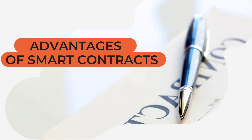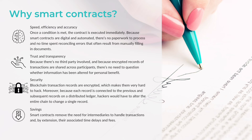First I will tell you about the advantages — maybe they are obvious, maybe not. The advantages are: speed, efficiency, accuracy, trust, transparency, security, and savings. Speed, efficiency, and accuracy: once a condition is met, the contract is executed immediately. Because smart contracts are digital and automated, there is no paperwork, no manual processes, and no time spent reconciling errors.